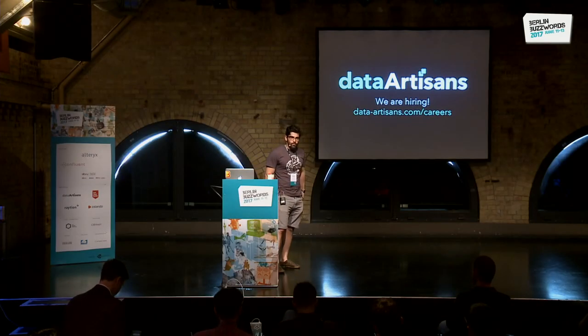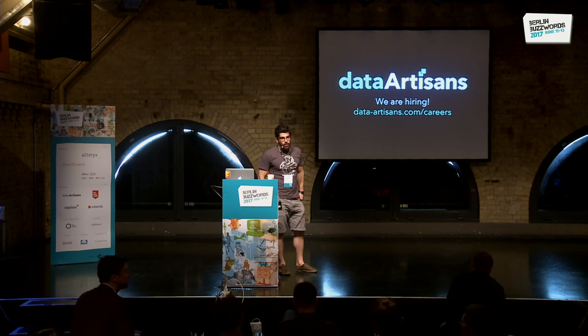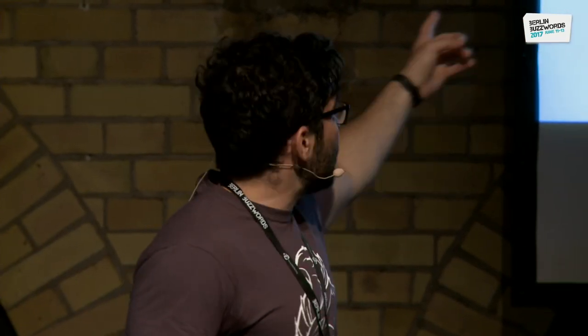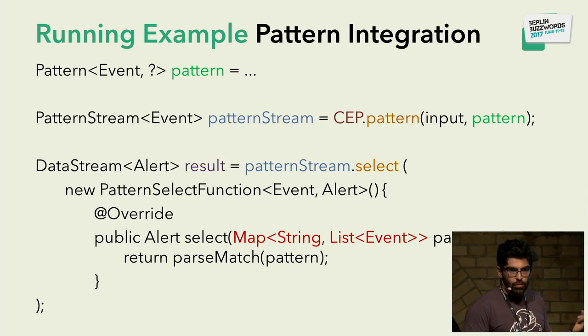Two questions: could you do something similar with a rules engine, and how does it work with windowing? Windowing is orthogonal — before or after the CEP part of your job, it's compatible with the DataStream API and all APIs that ship with Flink — SQL and everything. The result is a DataStream, so whatever you can do with a DataStream you can do after CEP as well. Windowing and everything else that ships with Flink is pretty compatible.